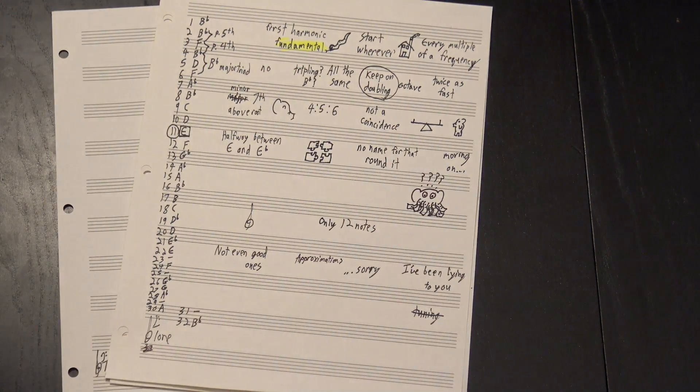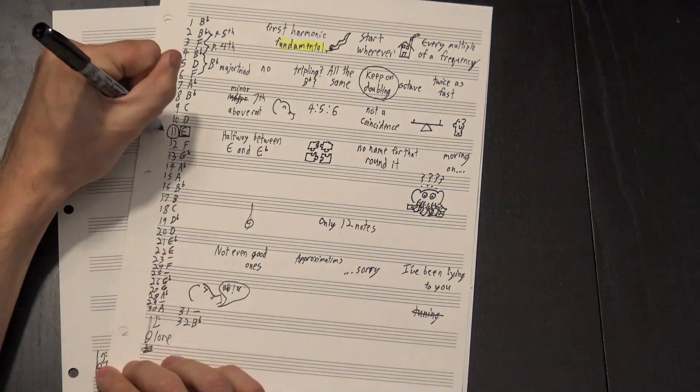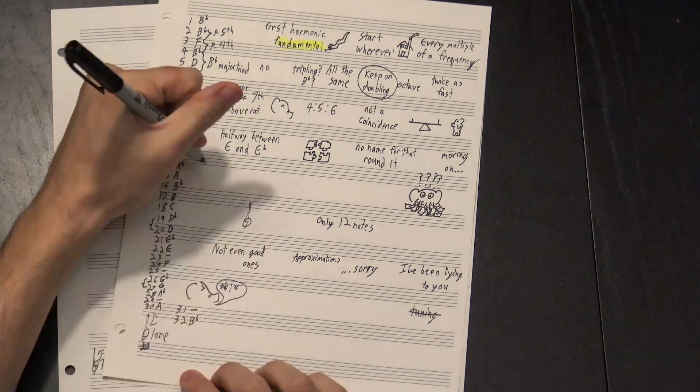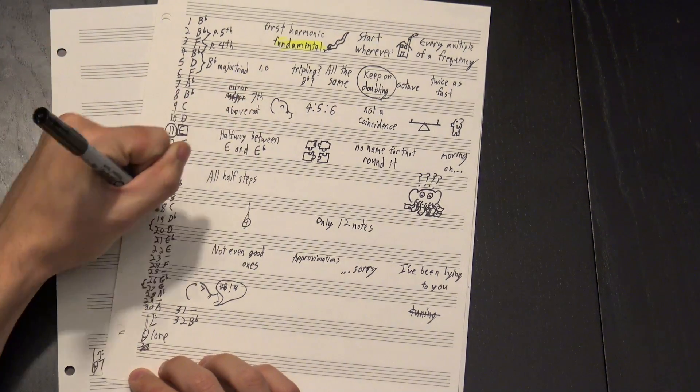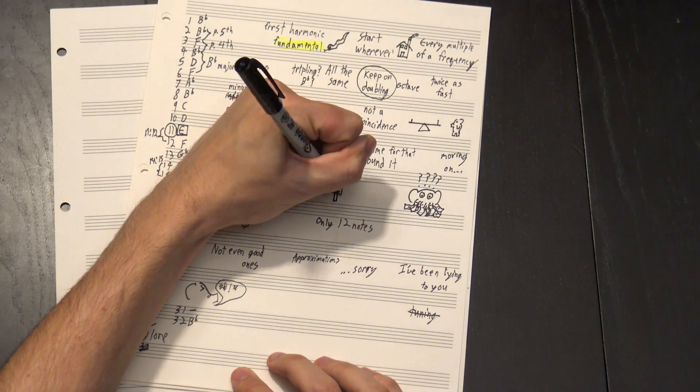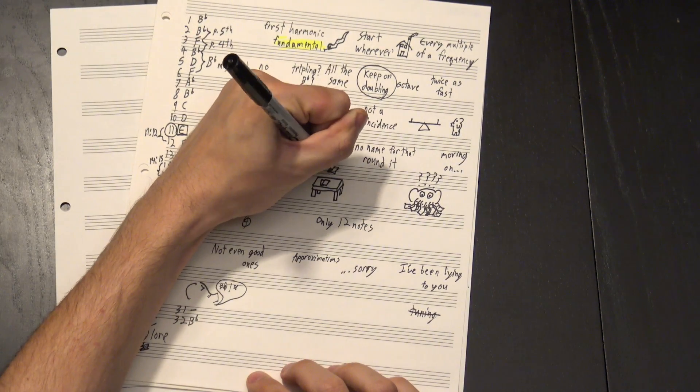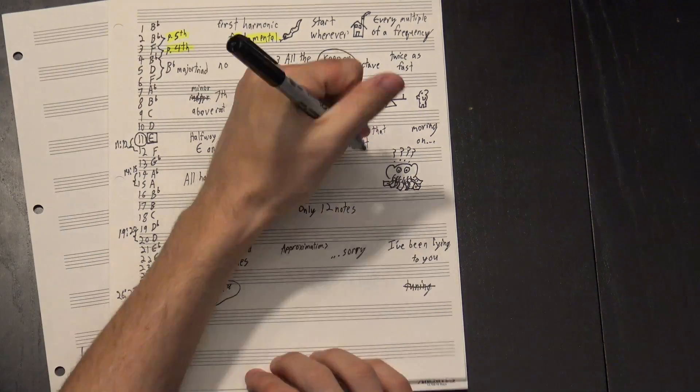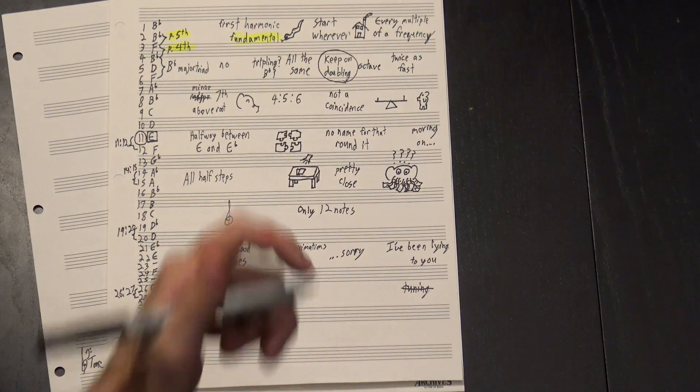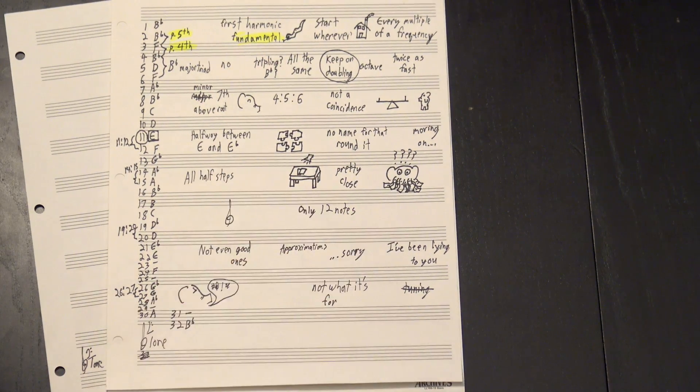We don't tune with a harmonic series because that wouldn't work. This, this, this, and this should all be the same interval, but they're wildly different ratios, and which frequencies we get for each note would completely depend on what we pick as our fundamental. Some of the lower ratios are pretty close to right, but really, tuning just isn't what the harmonic series is useful for.